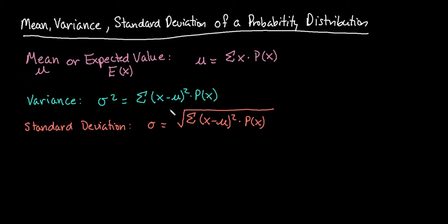To find the variance you have to find each individual value, subtract the mean from each of those, square each of those differences, and then take each of those differences and multiply it times the probability of X, and then sum that column. You could actually go through and do this step by step and show the work, but I'm just going to show you how to use the formulas built into Excel.